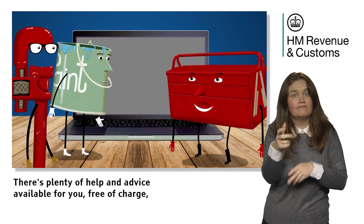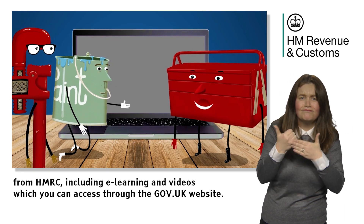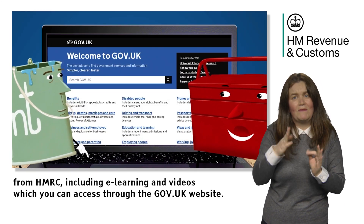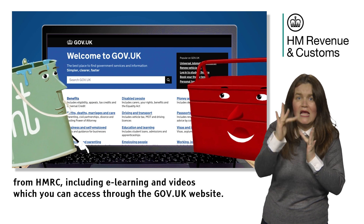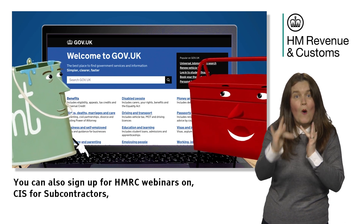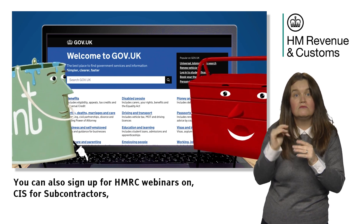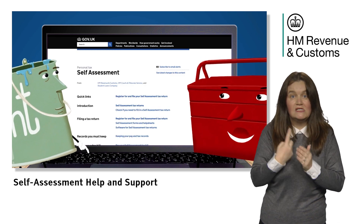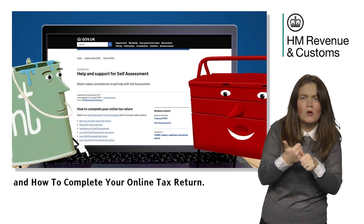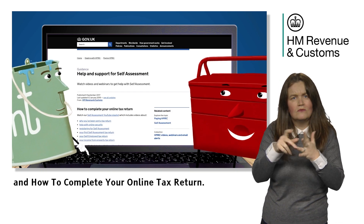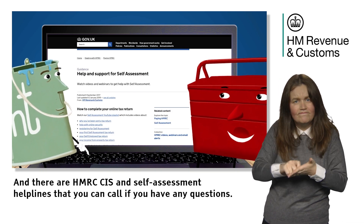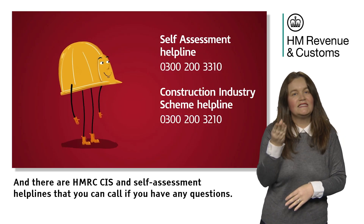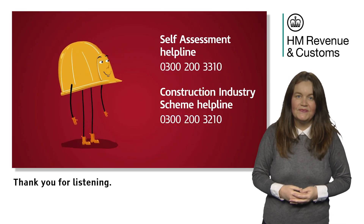There's plenty of help and advice available for you free of charge from HMRC, including e-learning and videos, which you can access through the gov.uk website. You can also sign up for HMRC webinars on CIS for subcontractors, self-assessment help and support, and how to complete your online tax return. And there are HMRC CIS and self-assessment helplines that you can call if you have any questions. Thank you for listening.